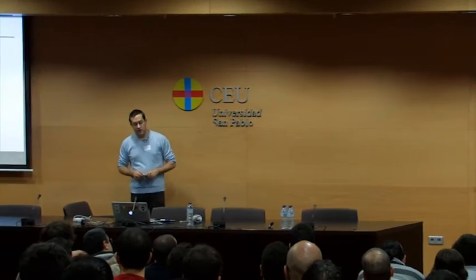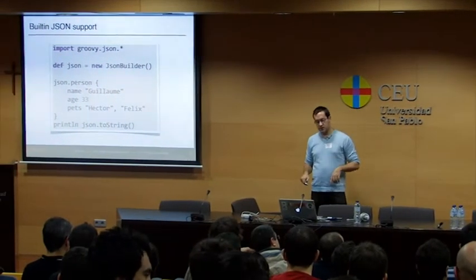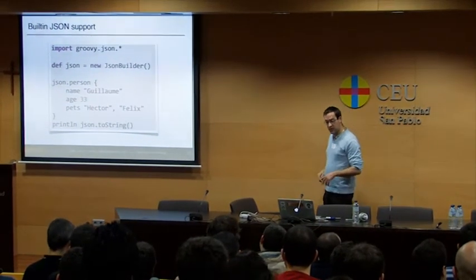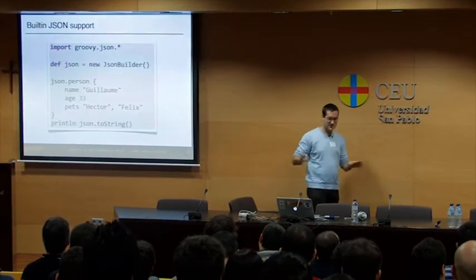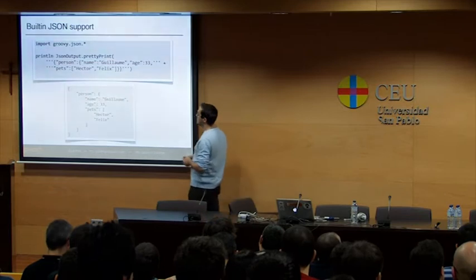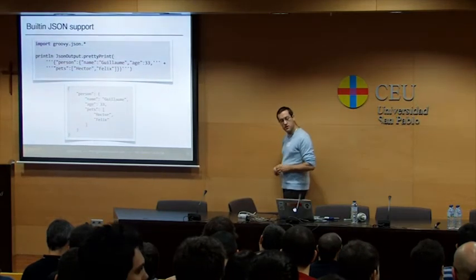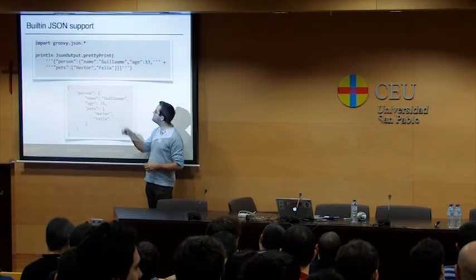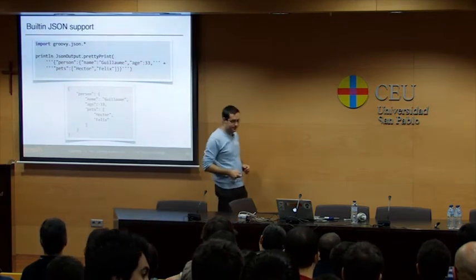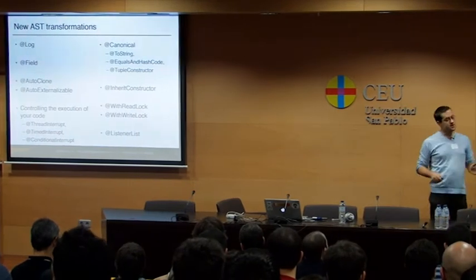We also have a builder for creating JSON payloads. The call "new JsonBuilder { person name: 'Guillaume', age: 34 }" creates a JSON object. It creates JSON without formatting, but you can use a utility method on the JsonOutput class to pretty-print a JSON payload. So the builder produces the JSON content, and pretty-printing makes it human-readable.